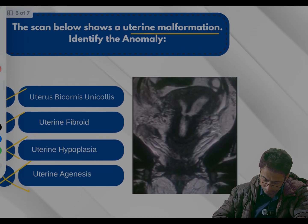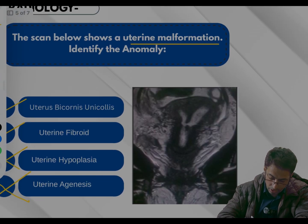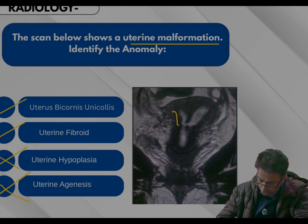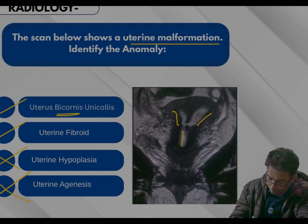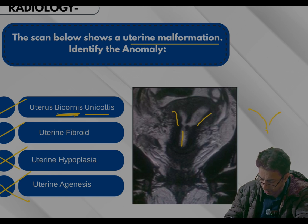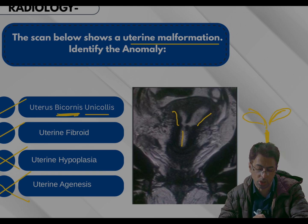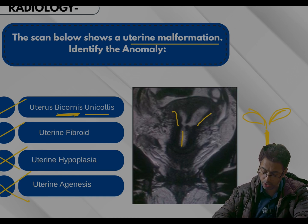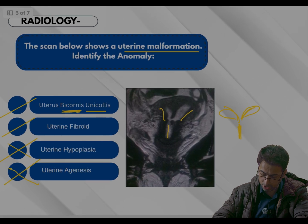The important finding is that this uterus has two horns — one horn, two horns — but the cervix is one. So it is basically bicornis unicollis: two horns but a single cervix. Remember the letter Y — two horns at the top and a single cervix below. So the answer is uterus bicornis unicollis, an important deformity of the uterus.